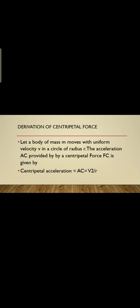Let's come towards the derivation of the centripetal force. Let a body of mass m move with uniform velocity in a circle of radius r. The centripetal acceleration provided by the centripetal force is given by: centripetal acceleration ac is equal to v squared divided by r.